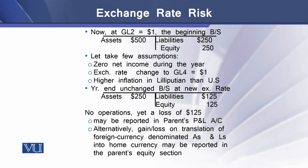The dollar-denominated value of equity has decreased from $250 at the start of the year to $125 at the end of the year. This means there is a decrease in equity value despite the fact that no operations took place during the year — there is still a loss of $125 US dollars, which will go to the owners in the home country.